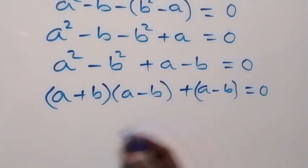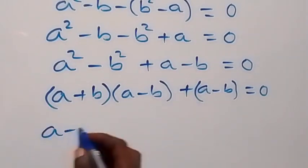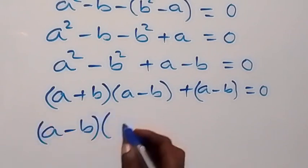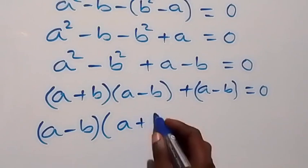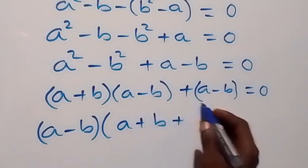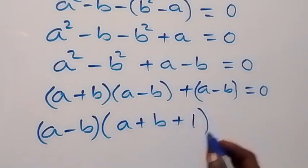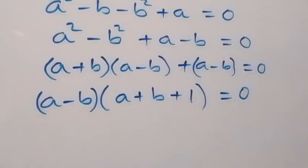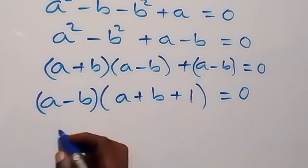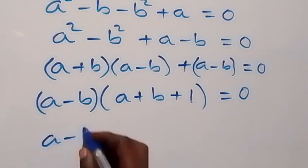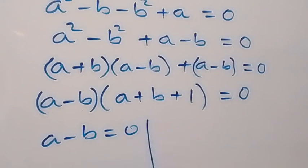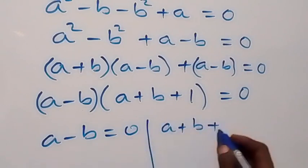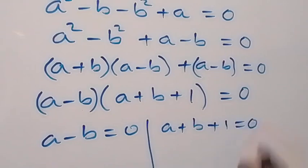Then here we have a minus b as a common factor. Factoring it out, we have a minus b times bracket a plus b plus 1, which equals 0. So we have two cases: a minus b equals 0, or a plus b plus 1 equals 0.